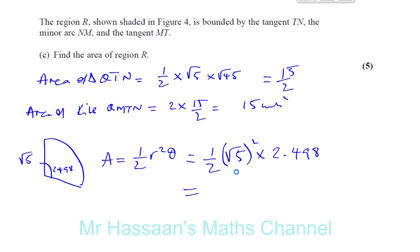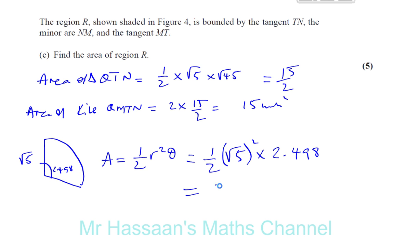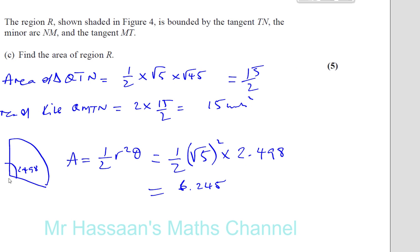So that's going to give you 5 over 2 times 2.498. So you have 5 over 2, 2.5 times 2.498, and that gives you 6.245, because that was three decimal places.